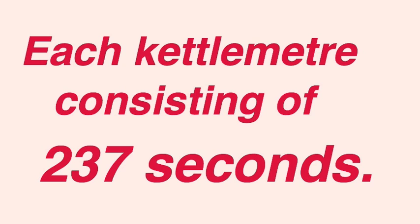A kettle day is composed of 364 divisions, known as kettle meters. Each kettle meter consists of 237 seconds. Kettle day appears on a clock as the first 3.956 minutes after midnight every calendar day.